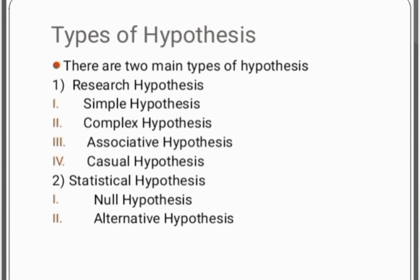Now we will discuss about the statistical hypothesis. Statistical hypothesis has two important subtypes: null hypothesis and alternative hypothesis. Null hypothesis, also known as H0, is a hypothesis which is being tested. Alternative hypothesis is the one which we are willing to accept if we reject the null hypothesis. These are the important types of hypothesis.